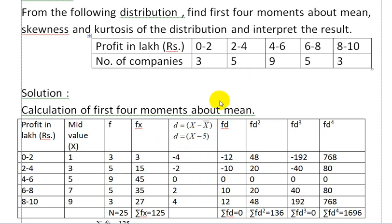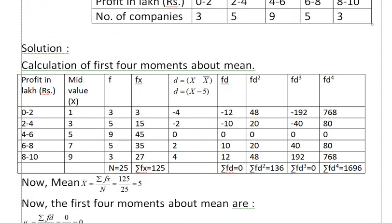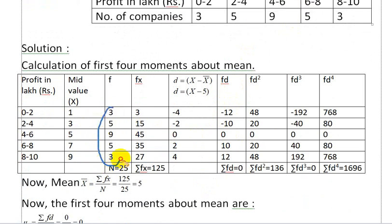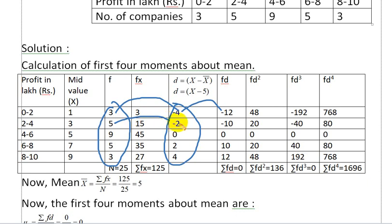Now for fd: f times d. For f=3, d=-4: fd = 3×(-4) = -12. For f=5, d=-2: fd = 5×(-2) = -10. For f=9, d=0: fd = 0. For f=5, d=2: fd = 5×2 = 10. For f=3, d=4: fd = 3×4 = 12. The sum of fd is zero.